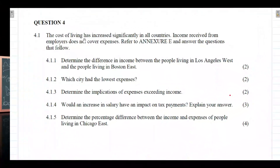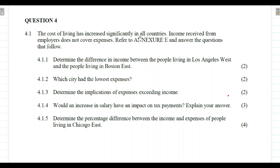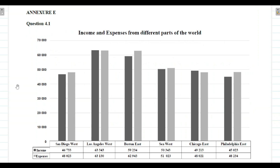Question 4.1 says: the cost of living has increased significantly in all countries; income received from employers does not cover expenses. Refer to Annex E and answer the questions that follow. Annex E has a stacked bar graph representing income and expenses from different parts of the world. The regions shaded in dark gray represent income, and the regions shaded in light gray represent expenses.